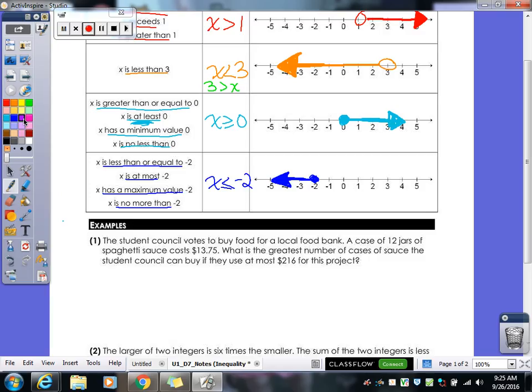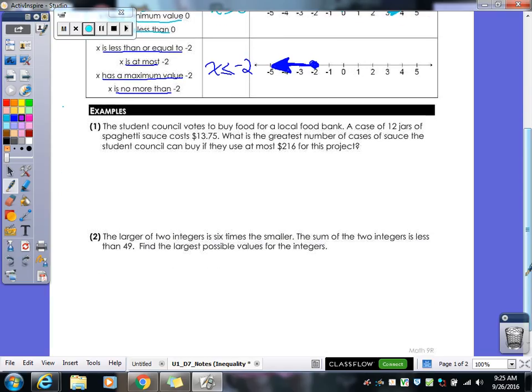So, let's try some examples. So we have the student council votes to buy food for a local food bank. A case of 12 jars of spaghetti sauce costs $13.75. What is the greatest number of cases of sauce the student council can buy if they use at most $216 for this project? All right, first question. What are we looking for?